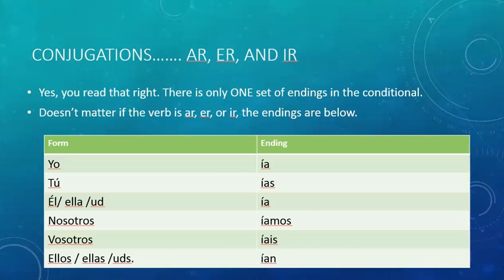Okay, so let's jump right into the conjugations. You're going to like this one. These are the conjugations for ER, AR, and IR. You read that right — there is only one set of endings in the conditional. It does not matter whether the verb is AR, ER, or IR. The endings will be as follows.